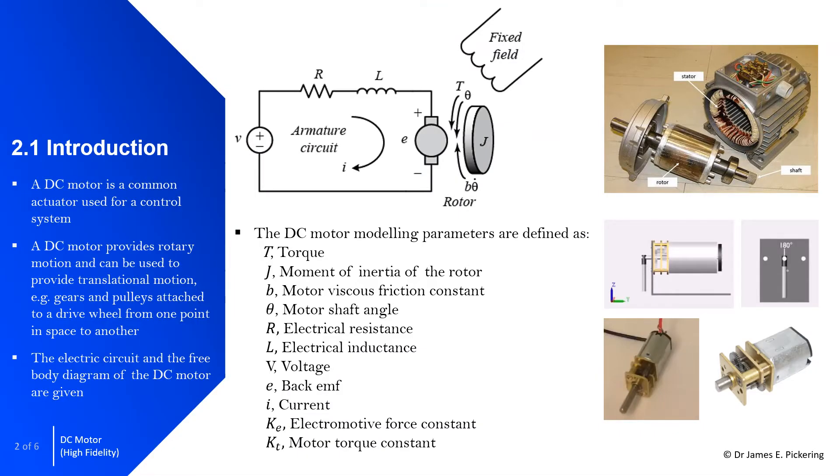So I'm going to start off by giving you an introduction. A DC motor is a common actuator used for a control system. So what the DC motor effectively does is make change to the state of a system. For example, we could use a DC motor to provide rotary motion. So if we look here, rotary motion, you can see we've got the rotor going to a desired position.